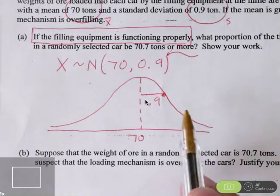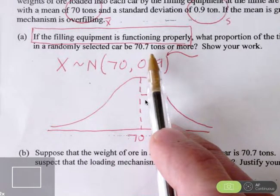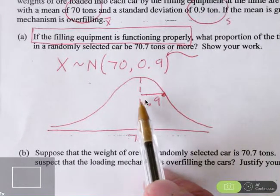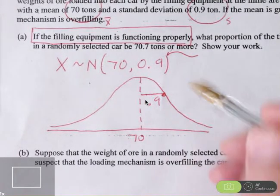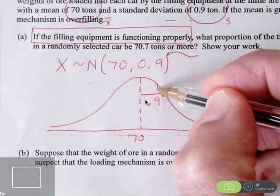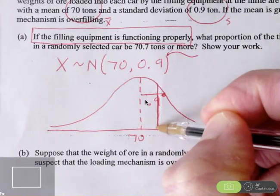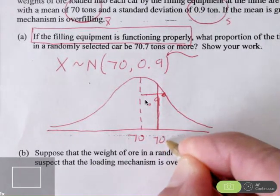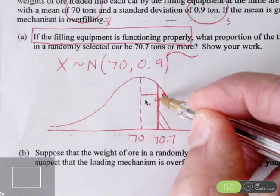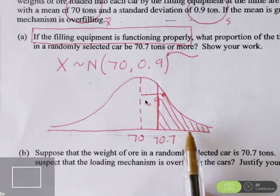Understand we are interested in how often a randomly chosen car will have a weight of 70.7 tons or more. 70.7 is not quite one standard deviation. 70.9 would be one standard deviation above the mean. So maybe we're about here. I am interested, if I read the question carefully, here's where 70.7 is. I'm interested in this much weight in the hopper car or more. This is the area under the normal distribution that I would like to calculate.